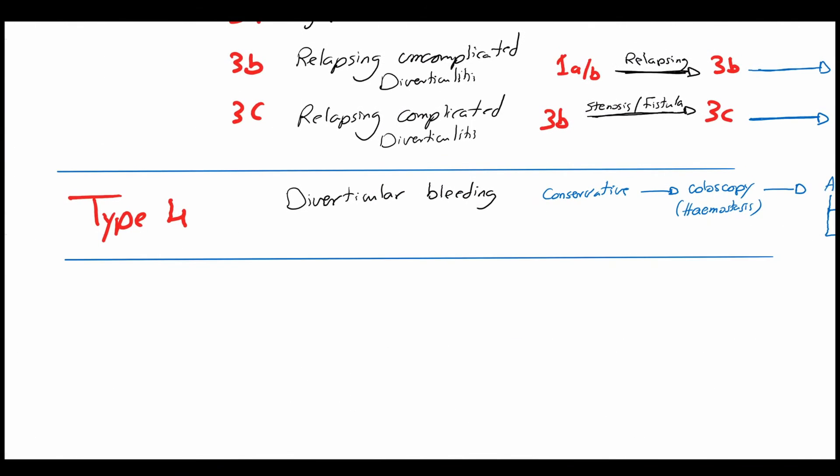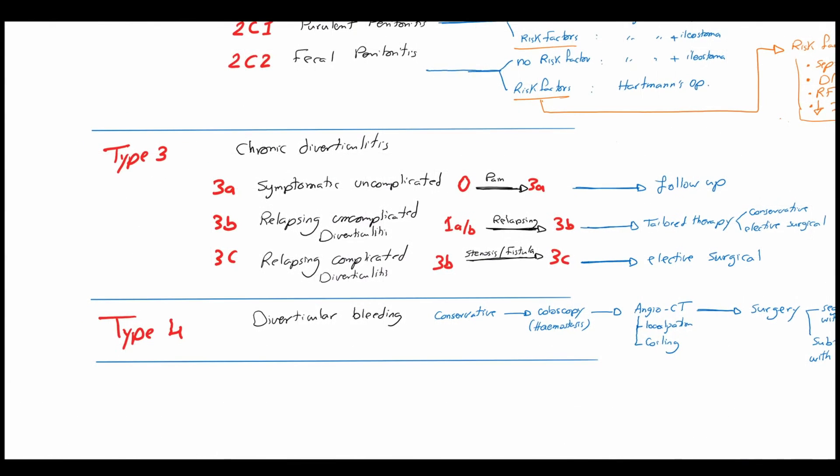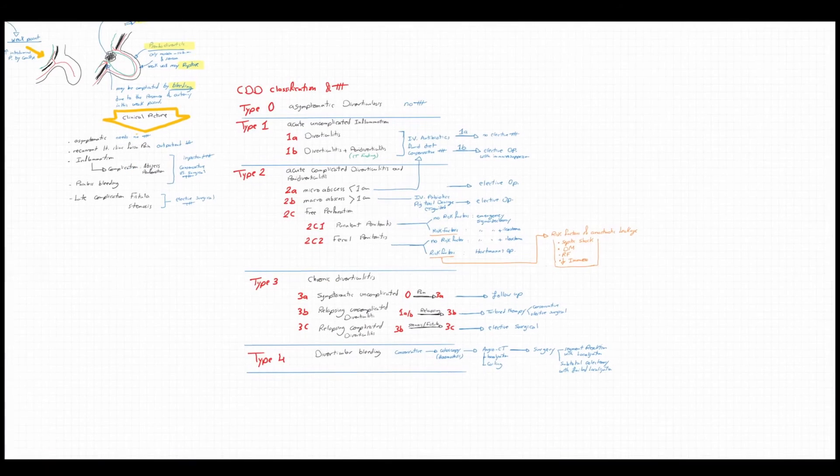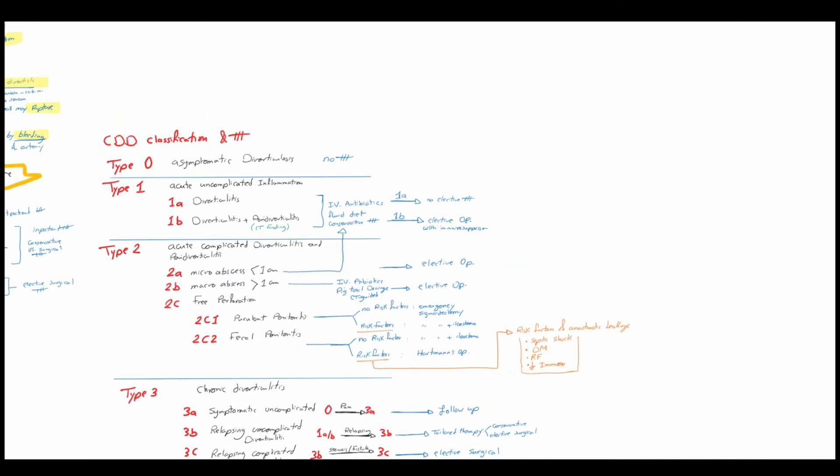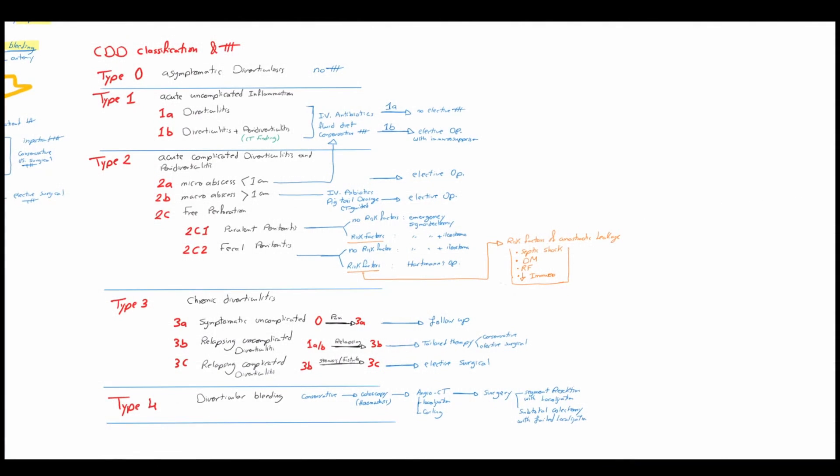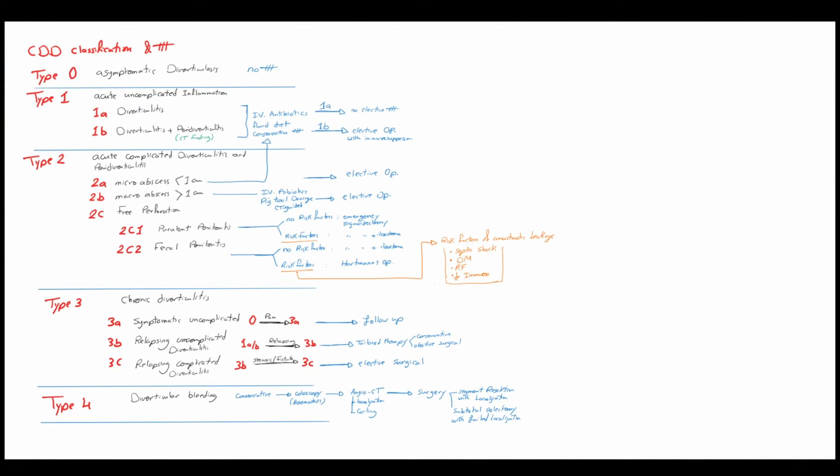Here is a quick summary. Type 0, asymptomatic diverticulosis, no treatment recommended. Type 1, acute uncomplicated inflammation, conservative treatment recommended and later elective treatment in cases of 1b.